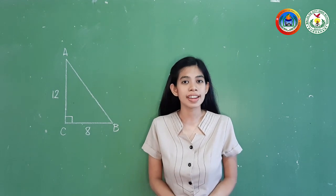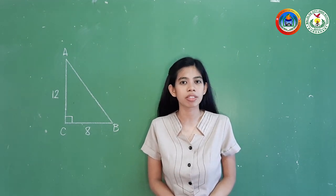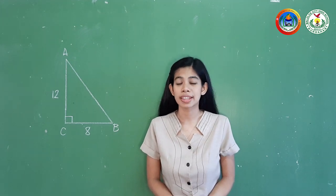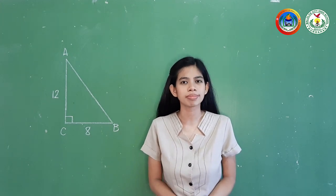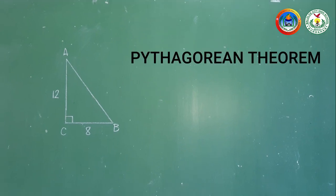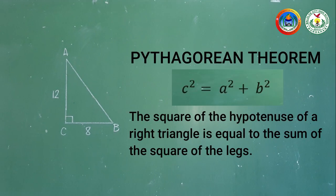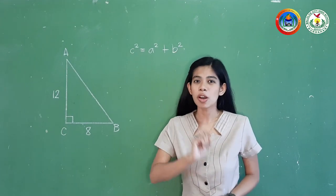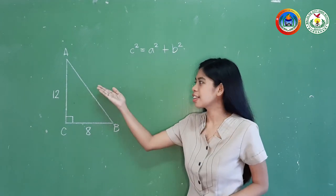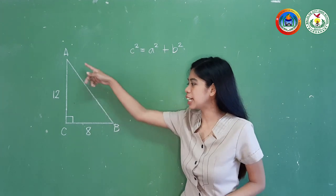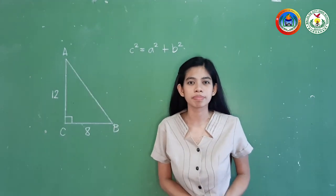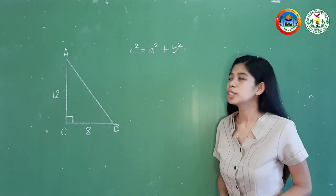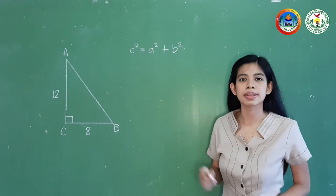What if only the legs are given? How do we find the measurement of the hypotenuse? In that case, we may use the Pythagorean theorem. You are given right triangle ABC with right angle C, and the measures of the legs are 8 and 12. Let us find the hypotenuse using C squared equals A squared plus B squared.